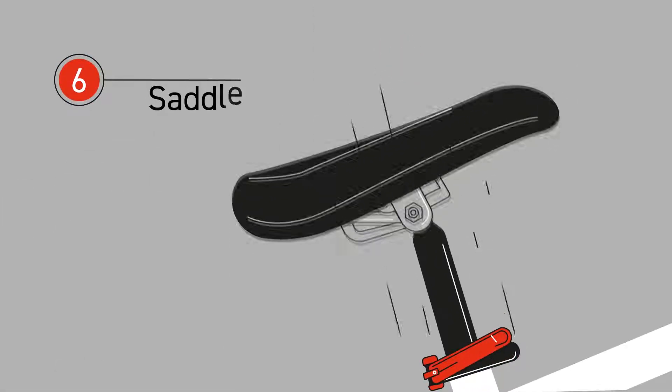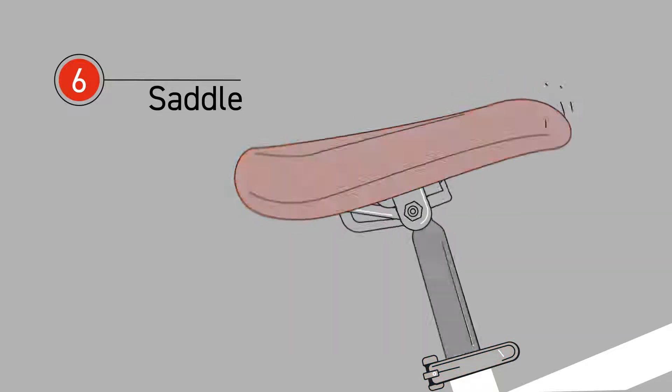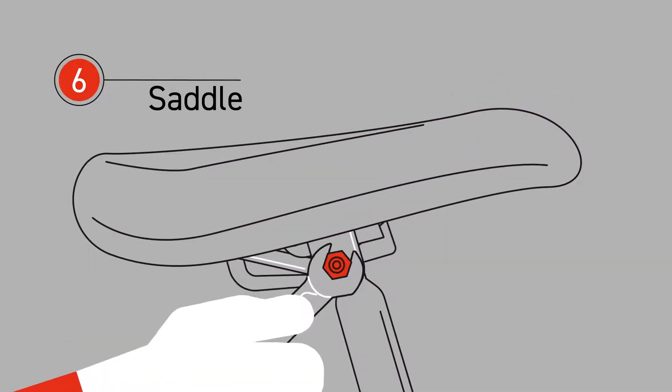Your saddle should be fitted securely at the right height and angle. Tighten bolts and the seat clamp if you need to.